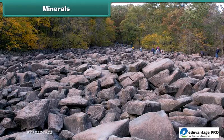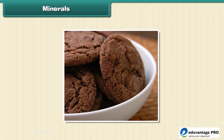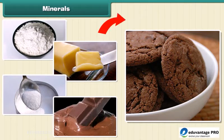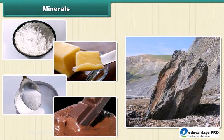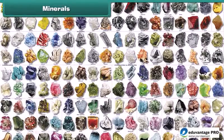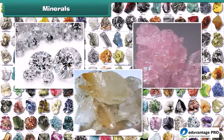Minerals. We have learnt about rocks. All rocks are made of minerals. Think of a chocolate cookie as a rock. The cookie is made of flour, butter, sugar, and chocolate. The cookie is like a rock, and the flour, butter, sugar, and chocolate are like minerals. Thus, minerals are naturally occurring pure substances from which rocks are formed. There are about 3,000 different minerals in the world, among which diamond is the hardest mineral. Quartz and calcite are two common examples of minerals.